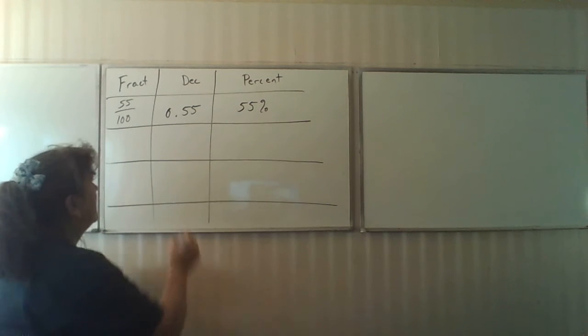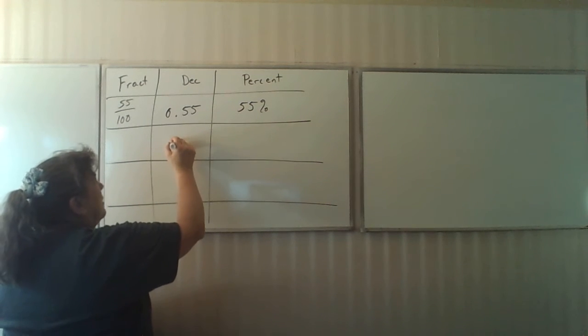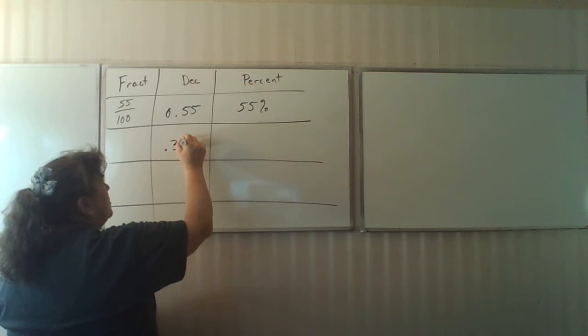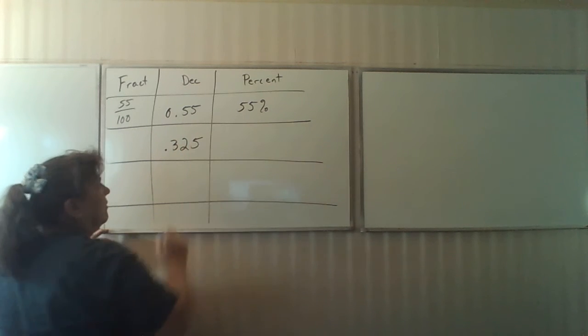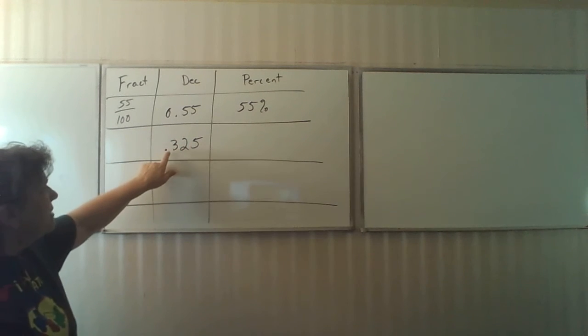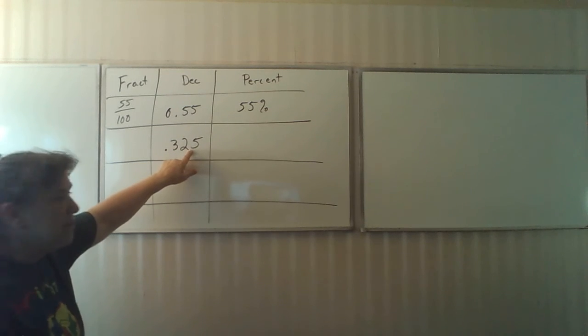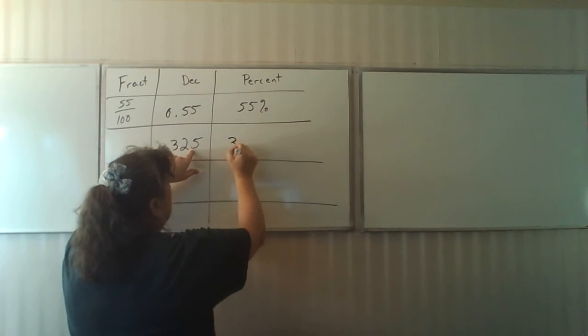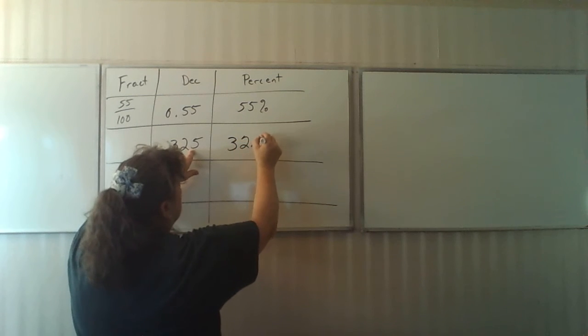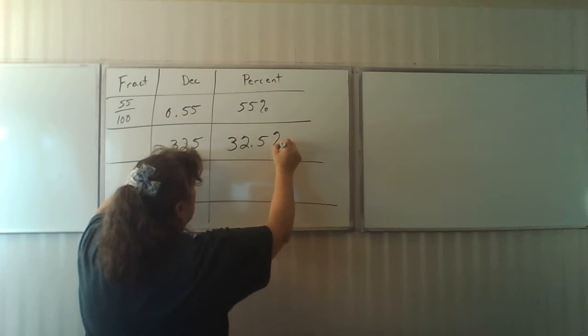Now, I'm going to give you a decimal, 0.325. Now, easiest, change it to a percent, multiply by 100 percent, moves my decimal two places to the right, and puts on the percent sign. So that's my percentage.